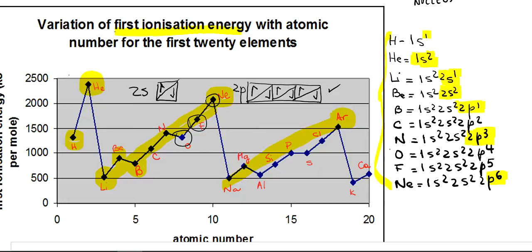After that, we know that after the neon, we have the sodium. So if we make the electronic configuration of sodium, we are going to have 1s2, 2s2, 2p6, and 3s1.